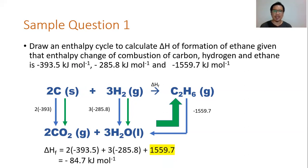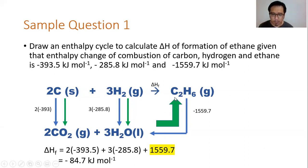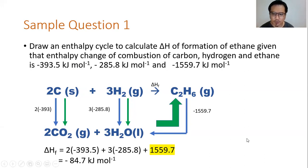The enthalpy change of formation is obtained by adding the enthalpy change of combustion of carbon (×2) and hydrogen (×3), then subtracting the enthalpy change of combustion of ethane, because you move in the opposite direction to the supporting information arrow. Punching the values into the calculator gives the answer of −84.7 kJ/mol.